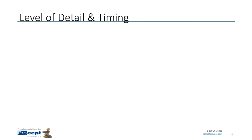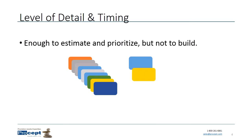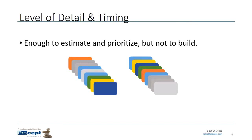First we'll talk about details and timing. The level of detail is quite specific: it's enough to estimate and prioritize, but not enough to build. We want to record enough detail that we can prioritize. Usually if we're doing software development, these backlog items are going to represent some features or some functionality, and it may be easy for us to prioritize them.